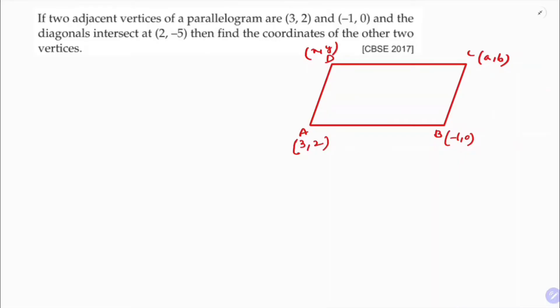So you need to find C and D. The diagonals bisect each other and intersect at (2,-5). So this point is (2,-5).